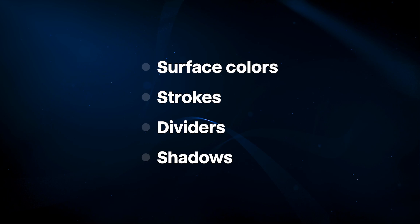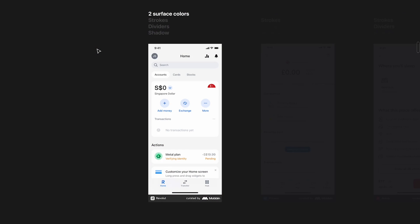I like to categorize the visual separation elements into four things: surface colors, strokes (which are basically borders around elements), dividers (used to separate sections), and shadows. We're going to look at multiple different apps and see how they use these four elements. I've got a few screenshots from Mobbin of different apps.